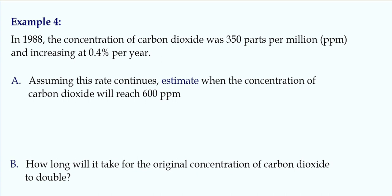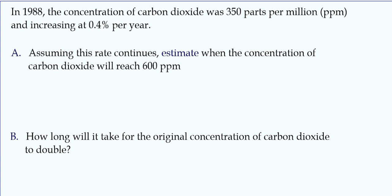So in 1988, the concentration of carbon dioxide was 350 parts per million, and increasing at 0.4% per year. Assuming it continues, when will it reach 600 parts per million? So when will 600 equal the initial amount, e to the kt? We know that k is increasing, so it's going to be positive. And 0.4%, move the decimal two spots.